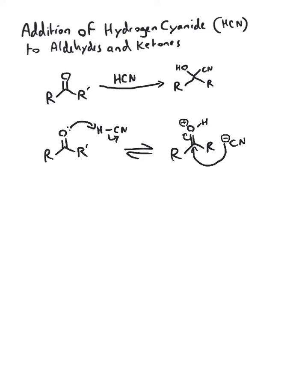This yields our product, which is called a cyanohydrin. They are relatively uncommon but they are pretty useful in certain polymerization reactions or other synthetic steps.